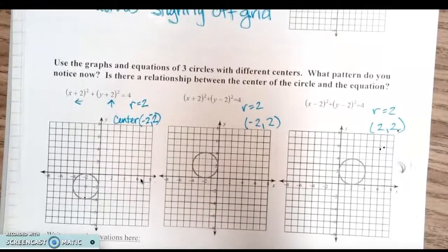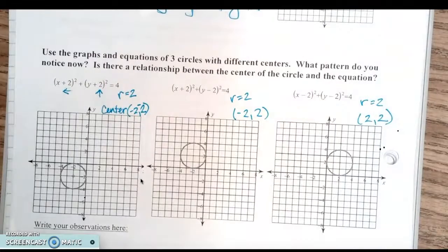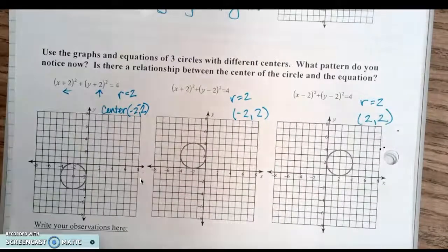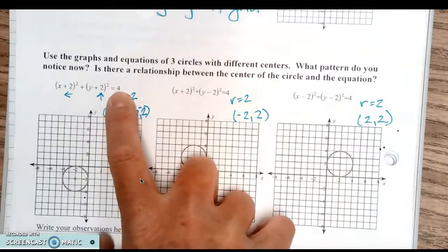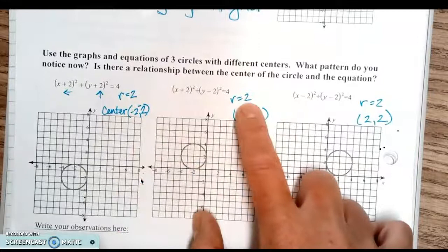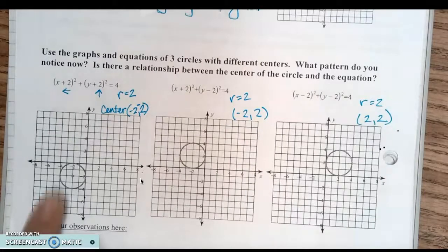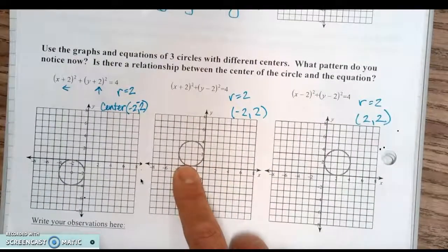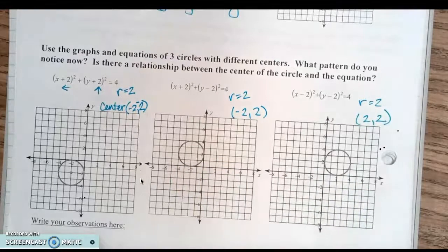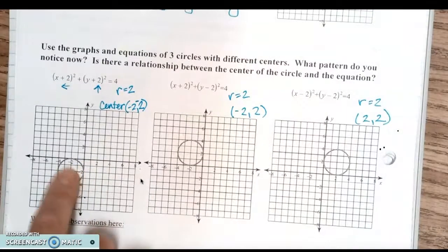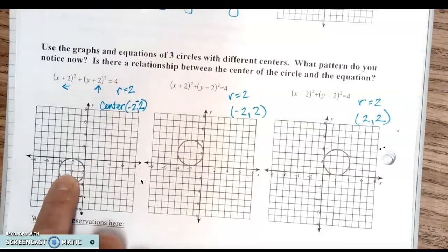The next three circles are drawn for you. Use the graphs and equations of three circles with different centers — now we're going to start moving the center around to see if we can figure out the pattern. What do you notice? Is there a relationship between the center of the circle and the equation? Notice these three all have a radius of 2 because they all equal 4 — the square root of 4 is 2 — but they're moved to different quadrants.